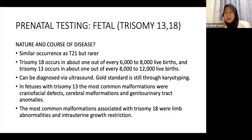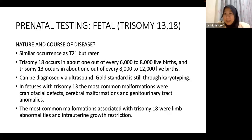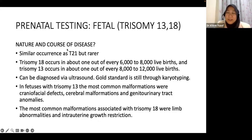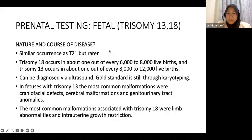For Trisomy 13 (Patau syndrome) and Trisomy 18 (Edwards syndrome): their occurrence is similar to T21 through non-disjunction — anyone can have a fetus with Edwards or Patau — but they are rarer. Trisomy 18 occurs in approximately 1 in 6,000 live births; Trisomy 21 has an overall population risk of about 1 in 1,000. An advantage with these two trisomies is that most cases present with anomalies detectable by ultrasound, though karyotyping remains the gold standard for diagnosis.